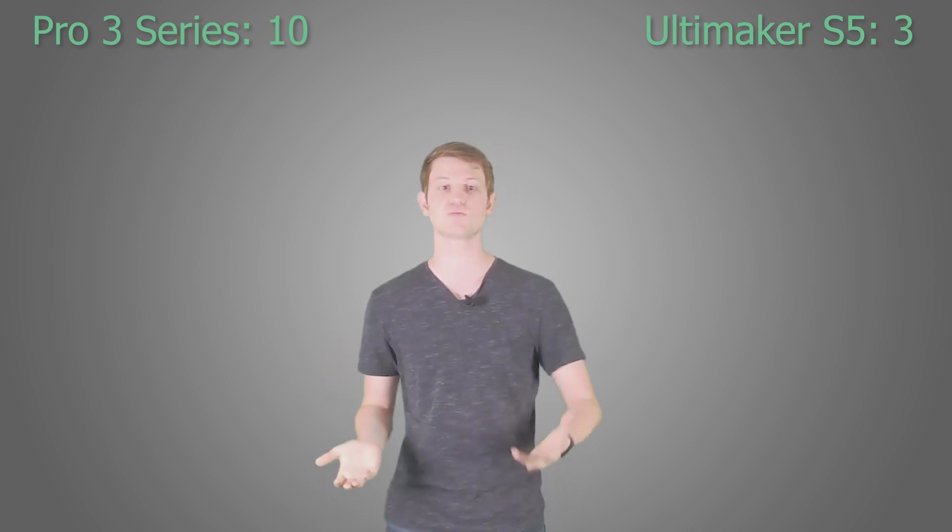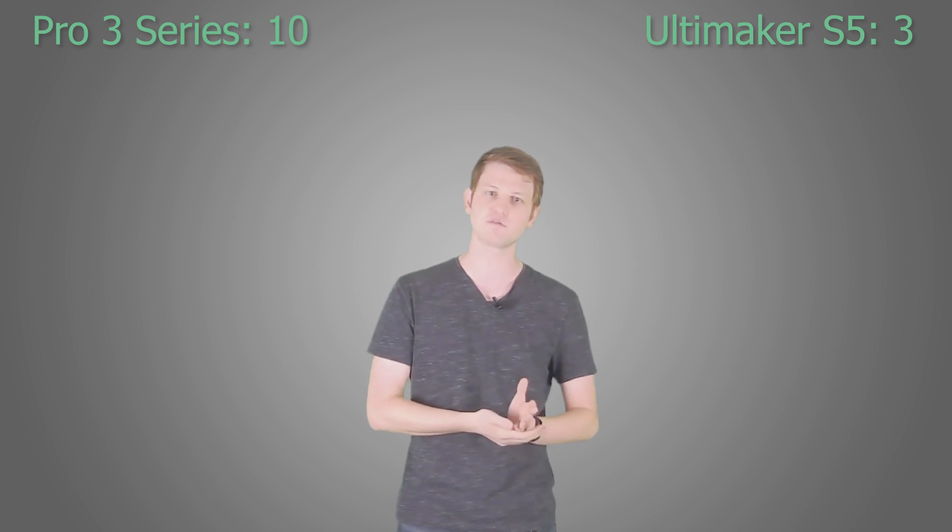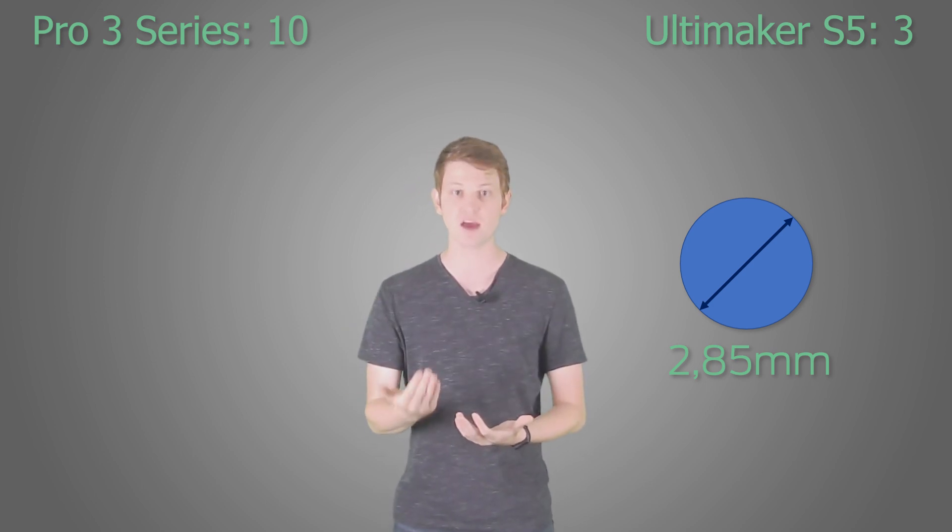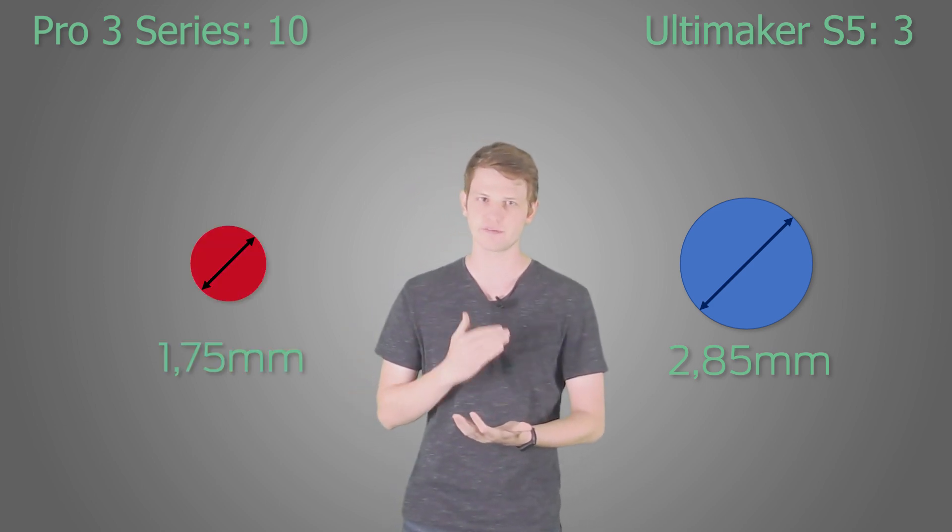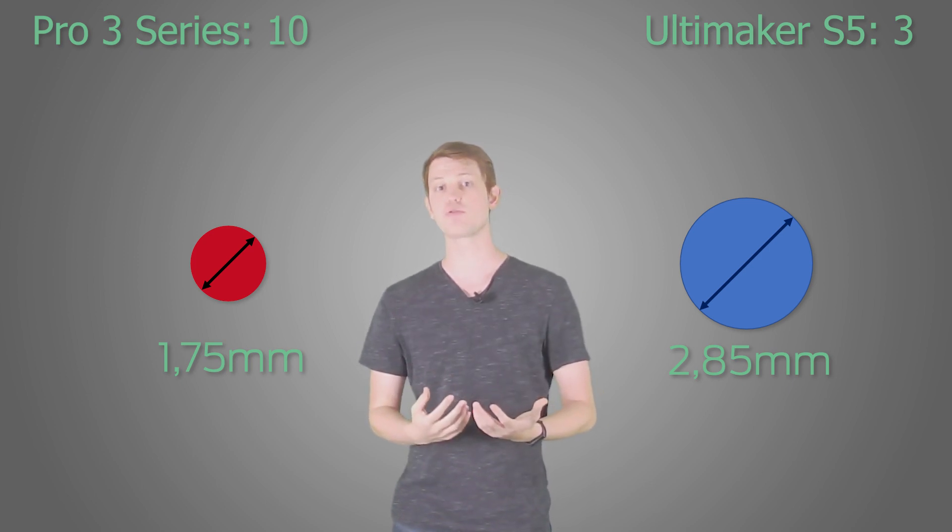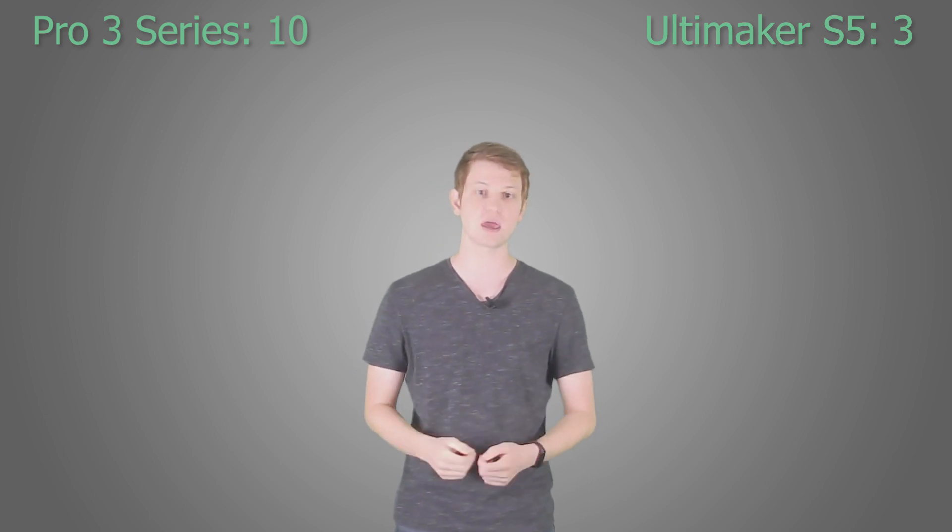Both printers are open systems, meaning you can use third-party filaments without any real issues. The main difference is that the Ultimaker S5 uses 2.85mm filament, as is typical for Bowden printers, and the Pro 3, being a direct-drive printer, uses 1.75mm filament. In theory, the Pro 3 should be able to print softer, flexible materials due to this difference in architecture, but whether you need that depends on your specific application, and with some proper machine tuning, you may just be able to make it work on the Ultimaker as well. It's another tie.